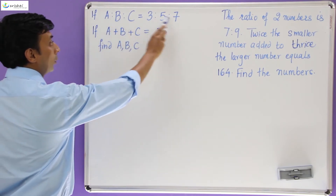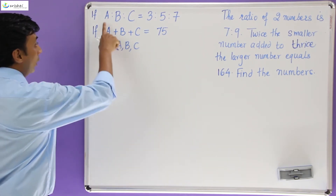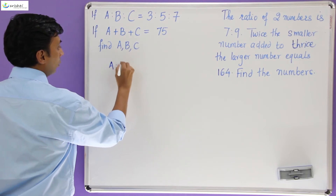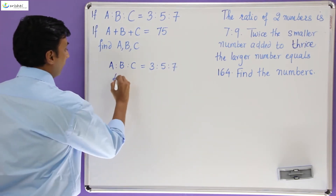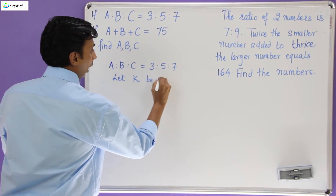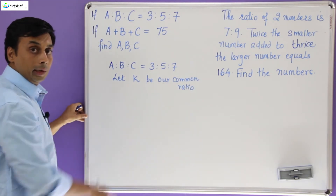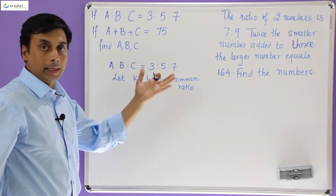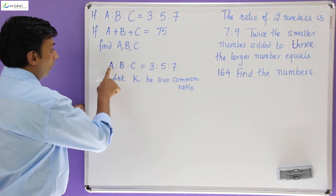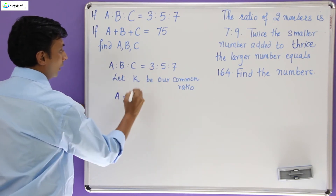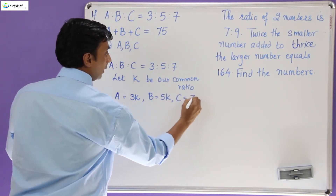So now let's take a look at two problems which use common ratio. The first problem says: if A is to B is to C is 3 is to 5 is to 7, and the sum of these numbers is 75, find those individual numbers. The ratio is given as A : B : C = 3 : 5 : 7. So let K be our common ratio — you can pick any alphabet. Since K is the common ratio, we can write A as 3K, B as 5K, and C as 7K.